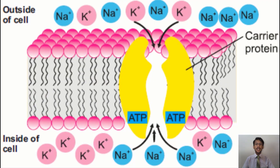Let's understand this example through this diagram. You can see the cell membrane with carrier proteins shown in yellow color, and ATP is also present. The area above the membrane is outside the cell and below is inside the cell. Outside the cell, sodium ions are relatively more and potassium ions are fewer. The role of the sodium-potassium pump is to move all sodium ions from inside the cell to outside.